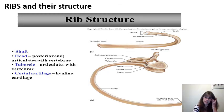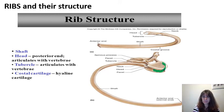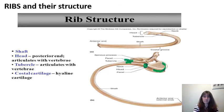Looking more closely at how the ribs attach to the thoracic vertebrae posteriorly: the head of the rib, which is the thickest part, will form an articulation or joint with the vertebral body. There is another structure on the rib called the tubercle, which will articulate with a facet on the transverse process of that thoracic vertebra. That is how the ribs attach posteriorly. That takes us to the end of this chapter, and we're going to move on to chapter 8.